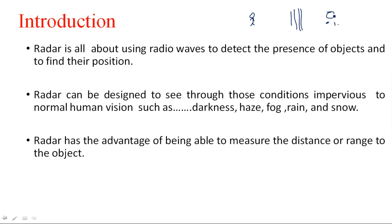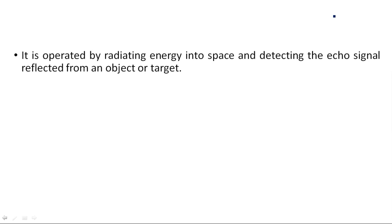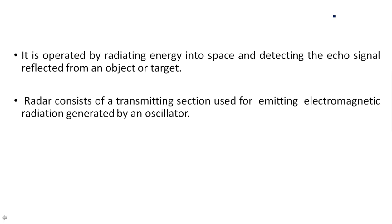Radar has the advantage of being able to measure the distance or range to the target — range is indicated by R. It is operated by radiating energy into space and detecting the echo signal reflecting from the object or target. Depending on processing of the reflected signal, it identifies the distance to the target. If an echo signal is present, the target is there; if not, there is no target.